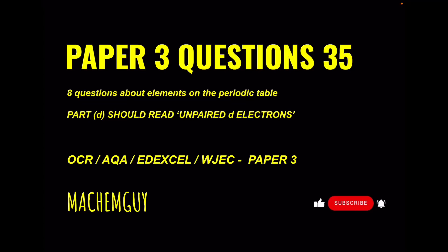I've got another question for the paper 3 questions playlist, so we're up to number 35 now. This one's got 8 short questions about elements on the periodic table. Before we start, I must point out that part D has a typo - it should read unpaired D electrons. Make sure you make a note of that before you start the questions. I hope you liked the video, and as always, the link to the questions in the description if you want to try them first.